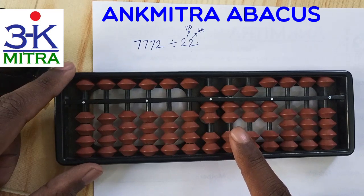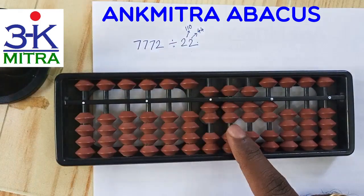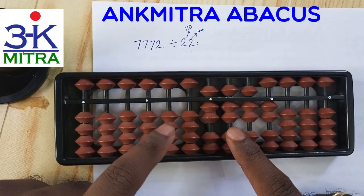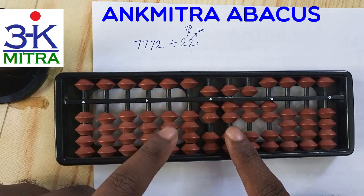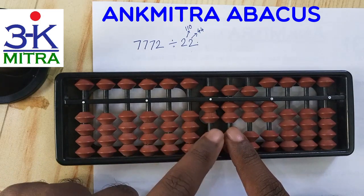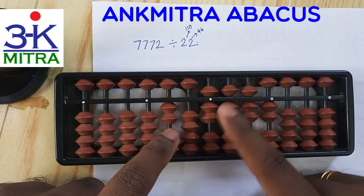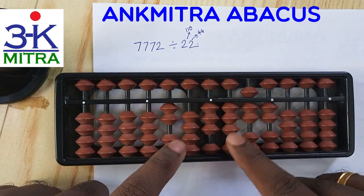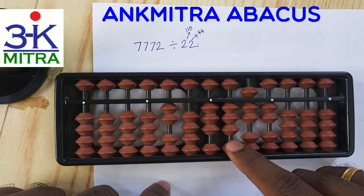Since it's a two-digit divisor, we first consider the first two digits from the left of the dividend, which is 77. From this we can easily subtract 2 times 22, which is 44. So 2 is taken on the third rod of the answer set. To subtract 44: plus 1 minus 5 on this rod, and plus 1 minus 5 on the next rod. After subtracting 44, we have 33 remaining on those two rods.